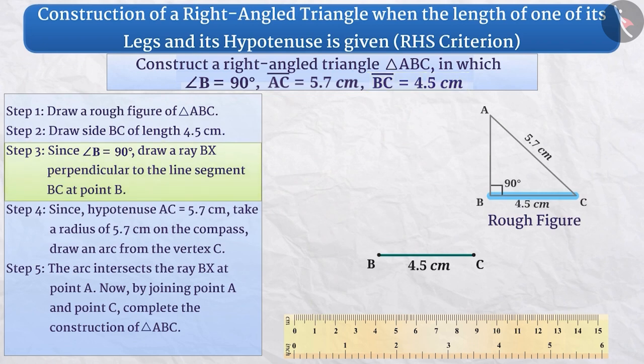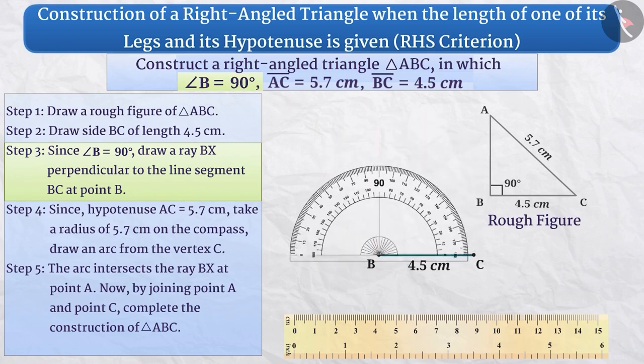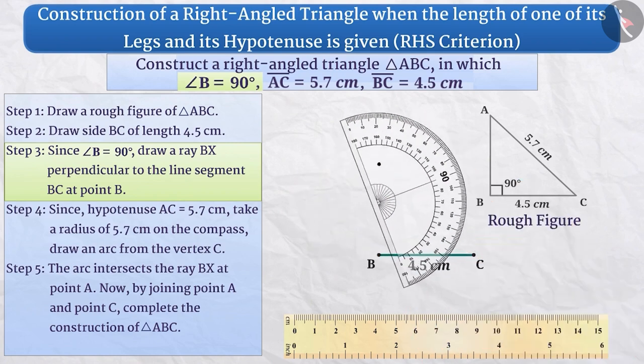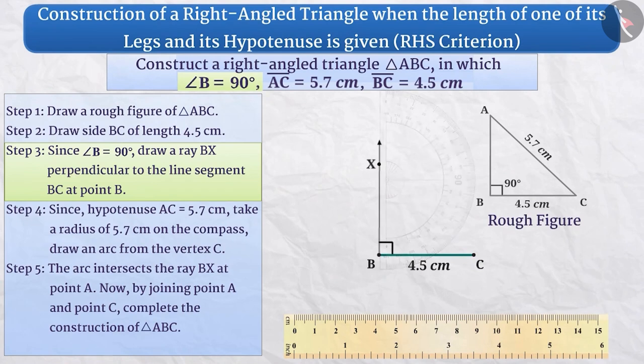Step 3. Since angle B measures 90 degree, we will draw a ray BX which is perpendicular to the line segment BC at point B. We can construct this by marking a point at 90 degree using the protractor and draw a ray BX passing through it.